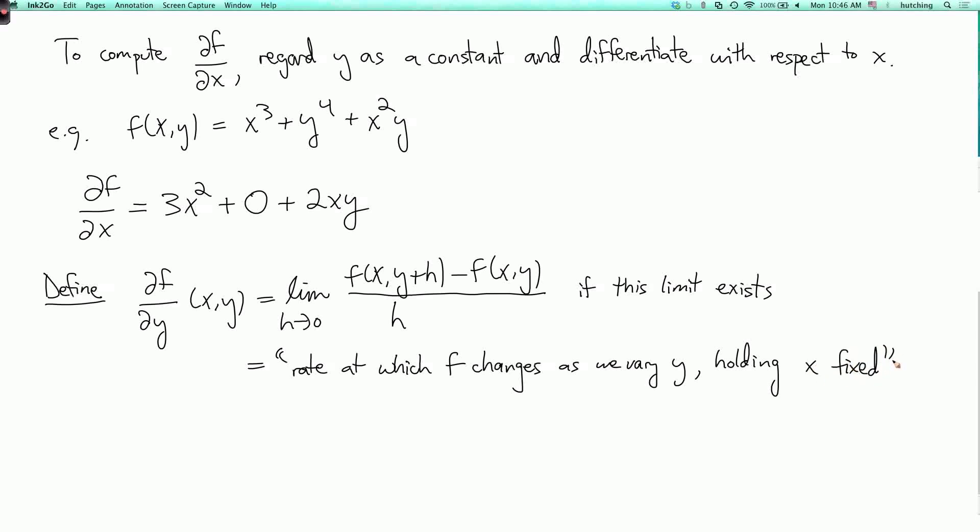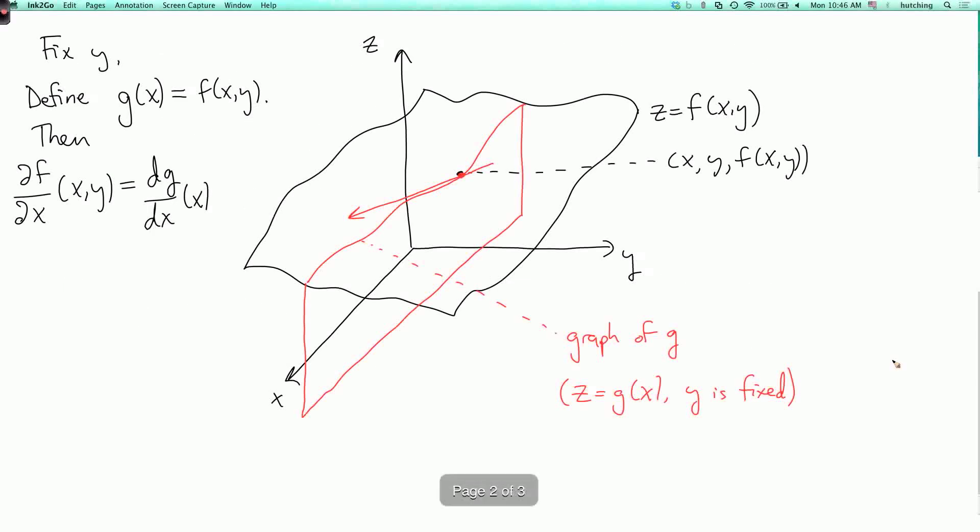And going back to the picture, so we can draw another curve on here, which I'll draw in blue. It looks something like this. So this is the intersection with another vertical plane where x is held fixed and y varies. And then the partial derivative with respect to y is the slope of this curve at this point, x comma y comma f of xy.